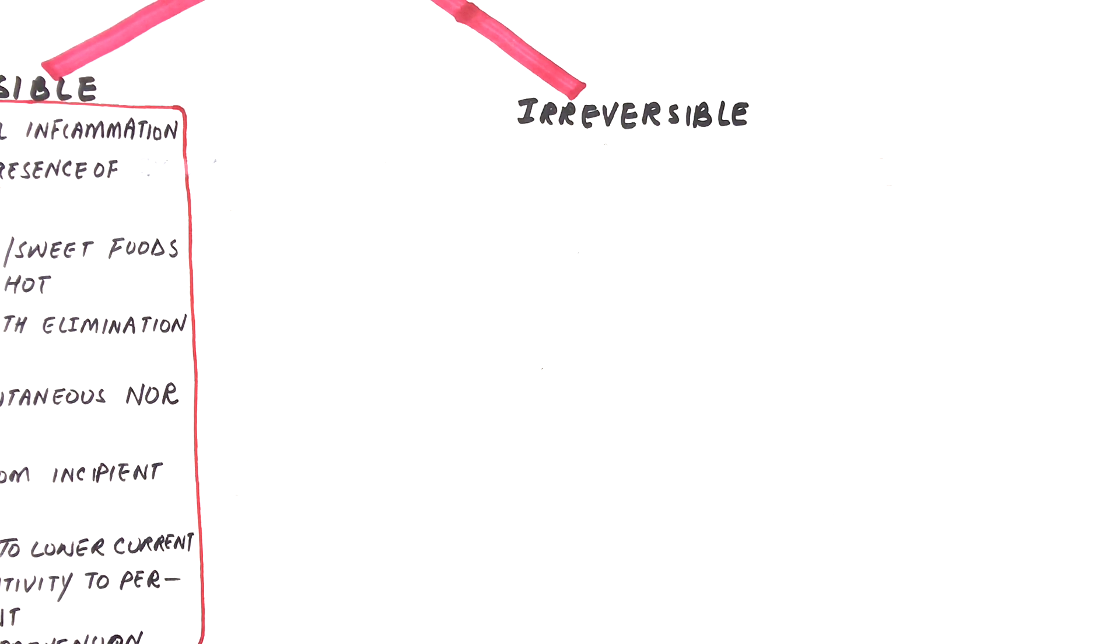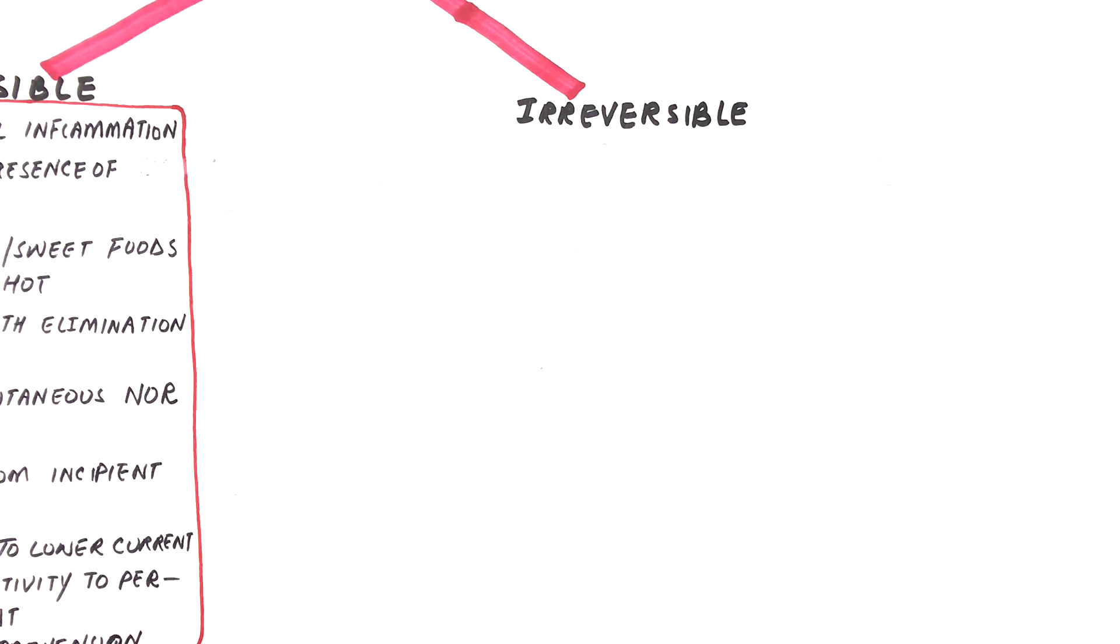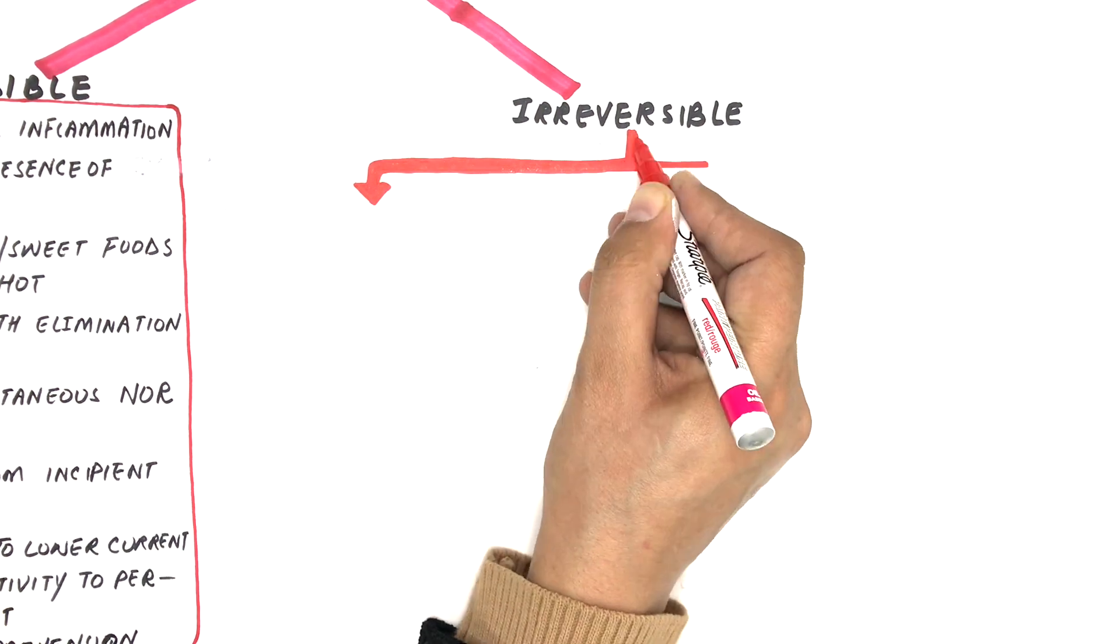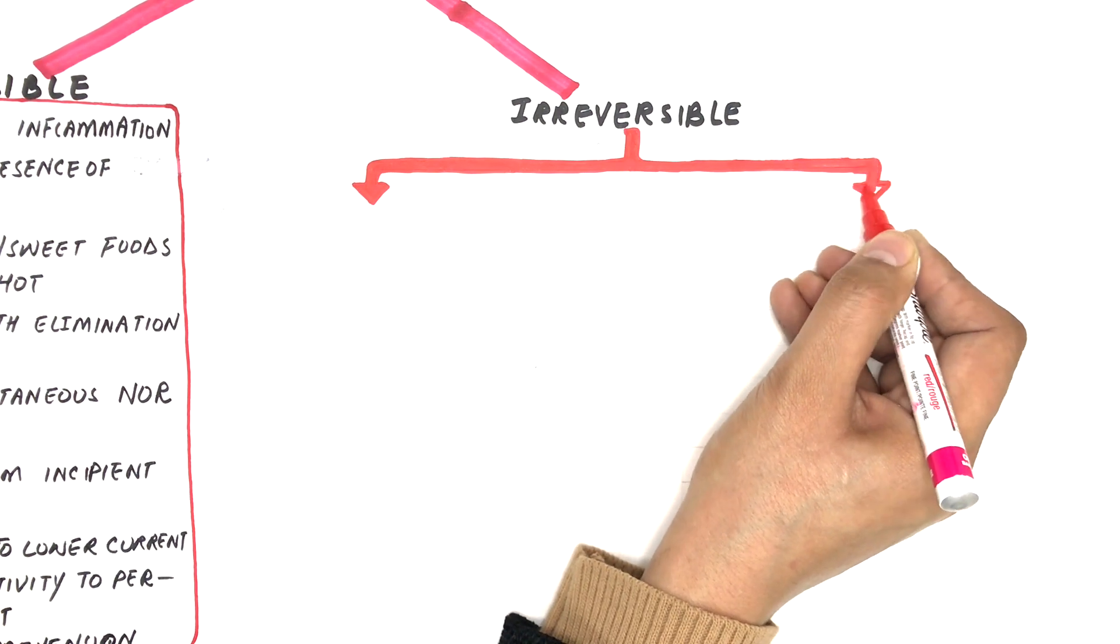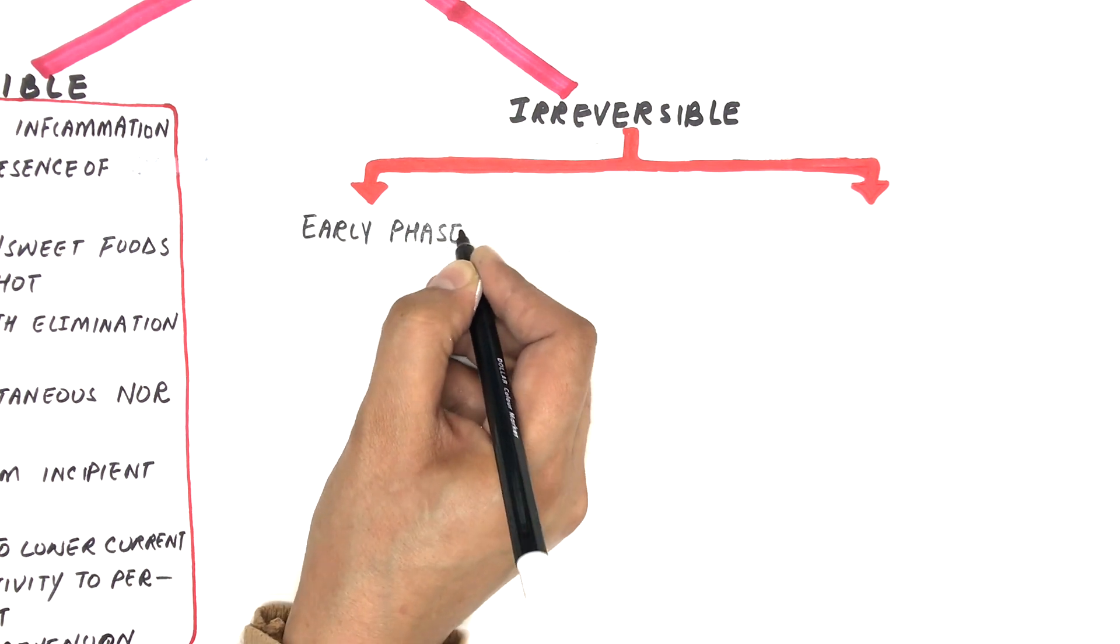If reversible pulpitis is not treated, it enters into the irreversible phase where the pulp becomes unable to return back to its normal state even after removal of the stimulus. It has two phases, an early phase and a late phase.